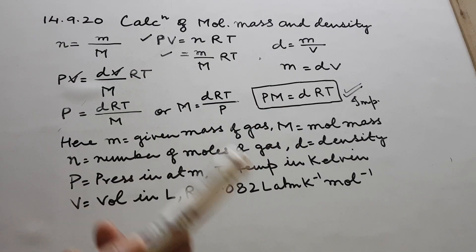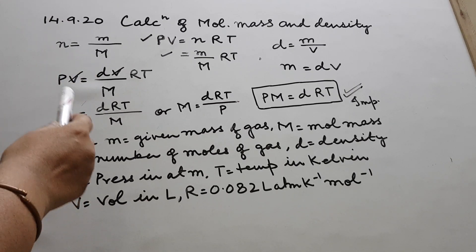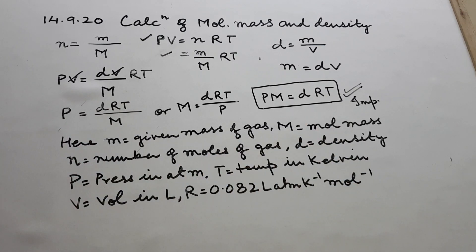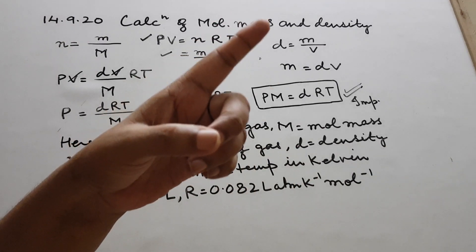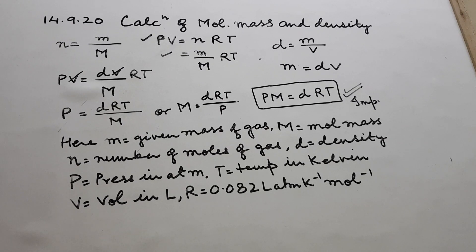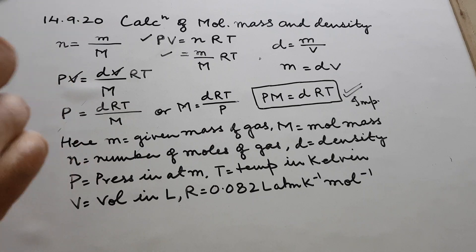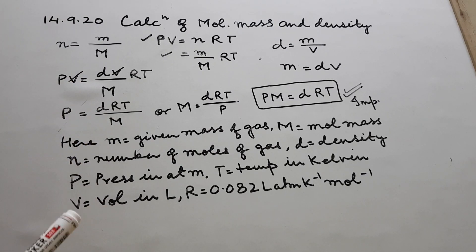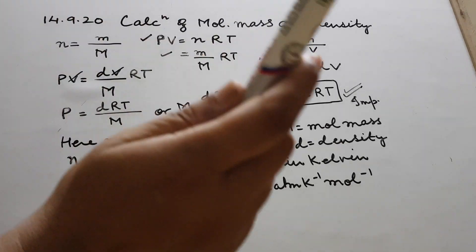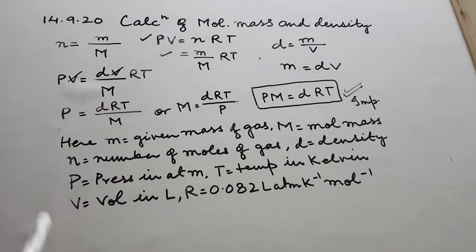In the equation, small m is given mass and capital M is molecular mass. Sometimes we call it molecular weight, but we are actually not very correct when we say that. Weight is totally different — W = M × G from physics, where G is gravitational pull. Our mass remains the same on Earth and on the Moon, but weight changes because G is different. So it is better to call it molecular mass and not molecular weight. That is why we do not use W here.